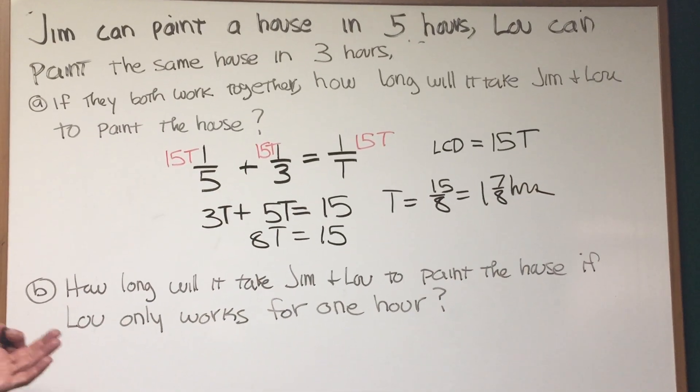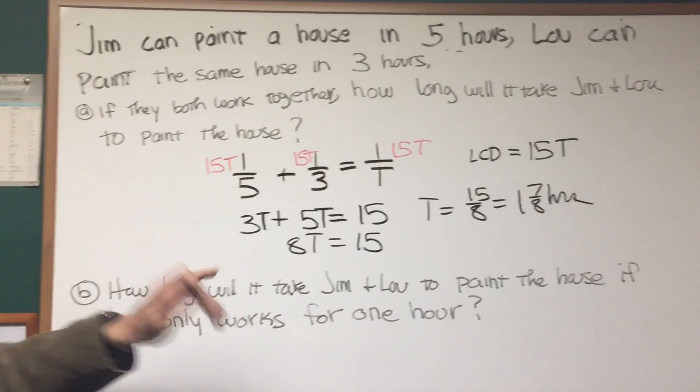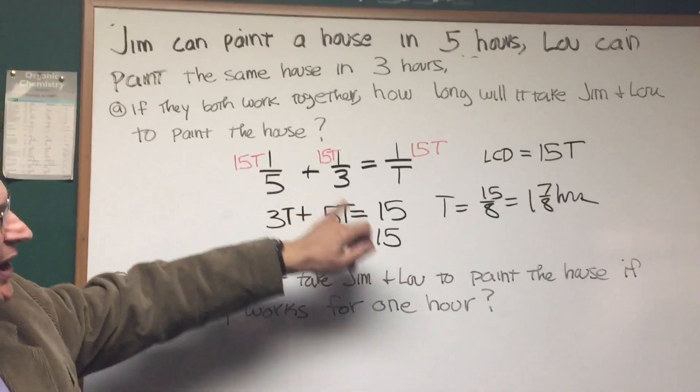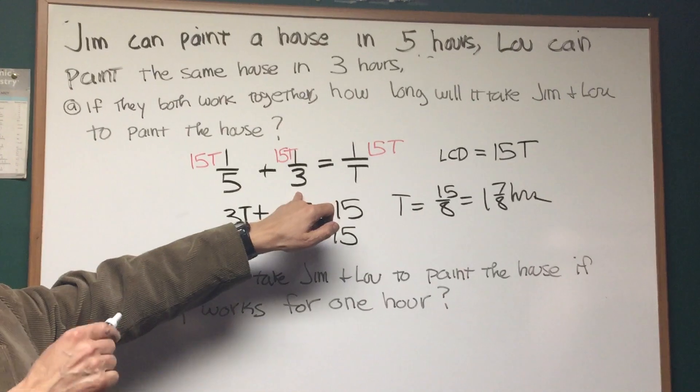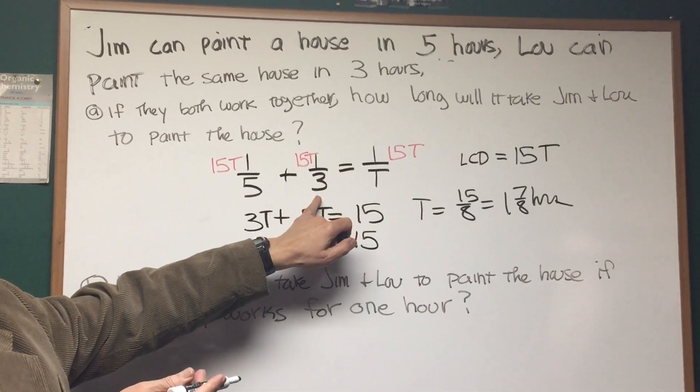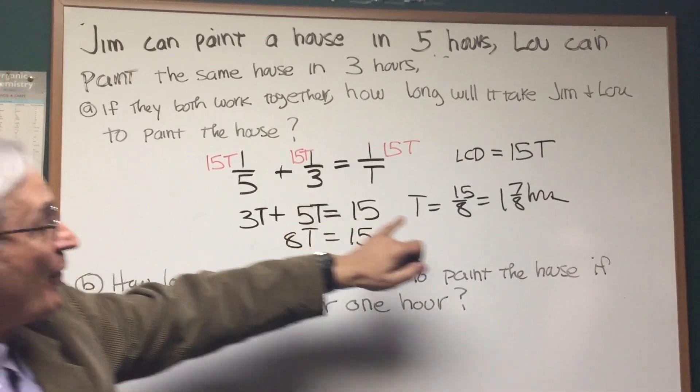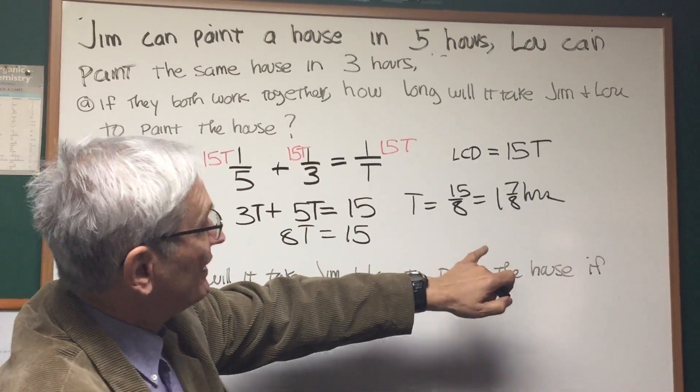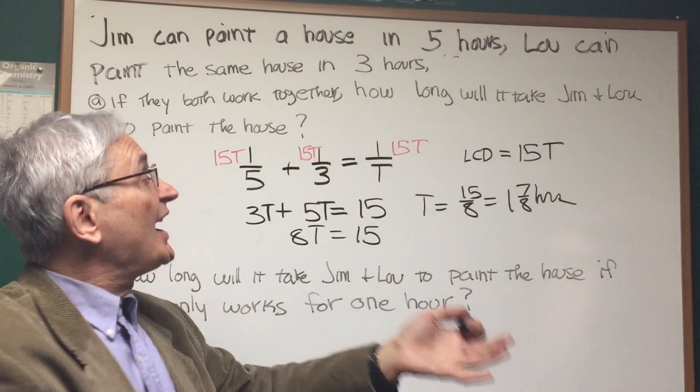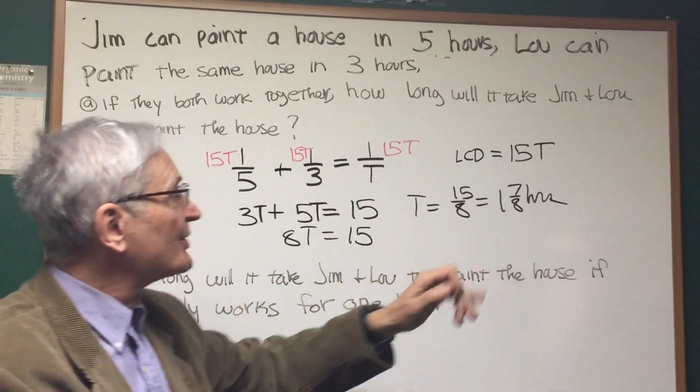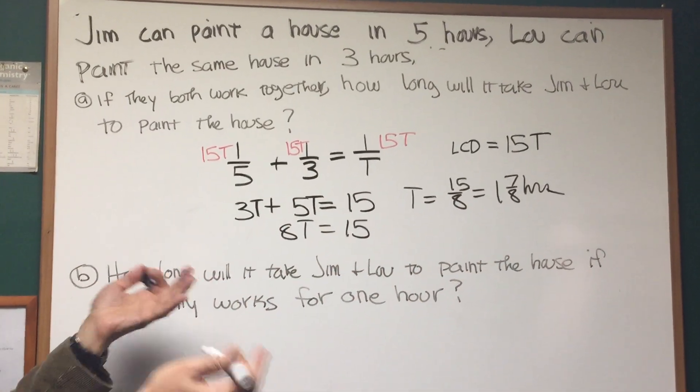So that's our solution. And we know that the combined rate, the time it's going to take them, is going to be less than the time of the fastest guy. It's going to be less than 3 hours. So if we're given multiple choice, and one of them is like 7 hours, or 4 hours, or even 3 hours, we know that's wrong. It has to be less than 3 hours, because 2 guys are working at the same time.